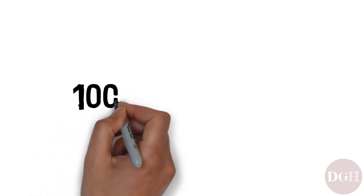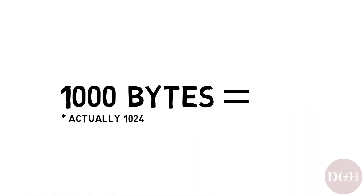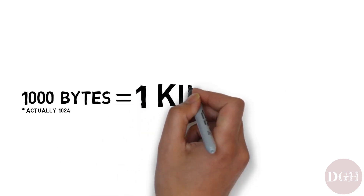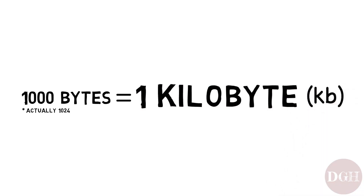That brings us to our next term. If you take 1,000 bytes and put them together, that's called a kilobyte, often abbreviated as KB or just K. Technically there are 1,024 bytes in a kilobyte, because computers use binary and everything comes in powers of 2. That said, it's okay to think of a kilobyte as simply 1,000 bytes, similar to how a kilometer is 1,000 meters, or a kilogram is 1,000 grams.